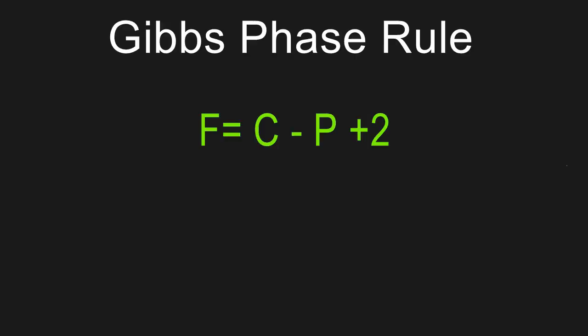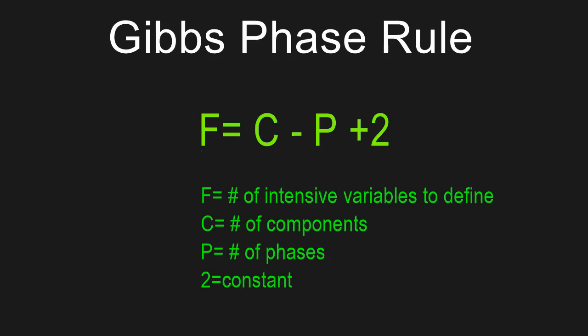Now let's look at the equation for Gibbs phase rule. It's F equals C minus P plus 2. F is what we are trying to find — F is the number of intensive variables we need to define before we can find the state of the system. Intensive variables are things like temperature and pressure — things that don't depend on the quantity of the substance.